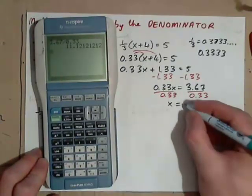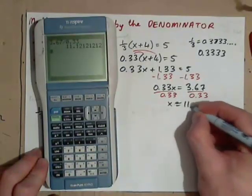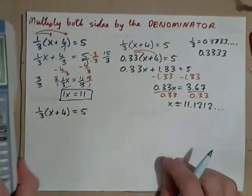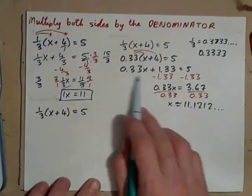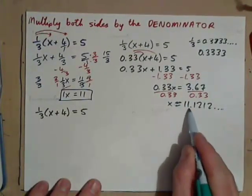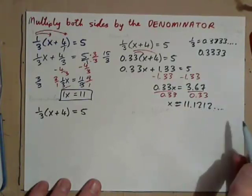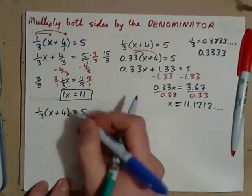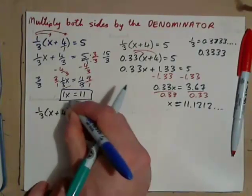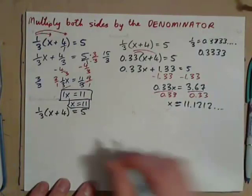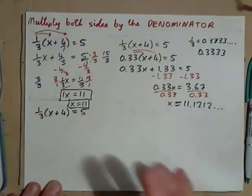Press enter. So what do we get? 11.1212. So using decimals, it's a lot of writing, and we don't have the perfect answer. We have 11.1212. That is not, the answer should be 11. We should have wrote this as x equals 11. That is the answer, not 11.12. The best method for these is, in fact, to do this.